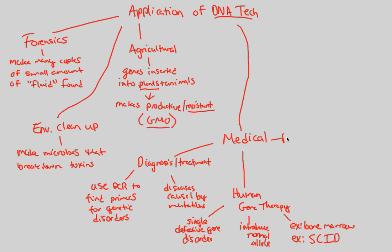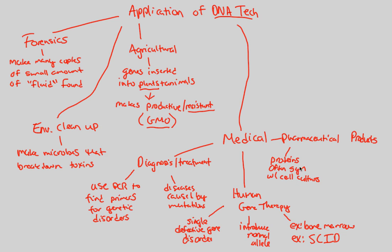Finally, we can talk about pharmaceutical products — I've mentioned this a couple of times already. The insulin example is the basic idea behind pharmaceutical products utilizing DNA technology. Proteins like insulin are synthesized using cell cultures: you insert recombinant DNA into E. coli, let it grow on agar, and it produces insulin over and over again, which you then isolate. Two basic examples of this are human growth hormone (HGH) and insulin, both produced through this DNA technology process.